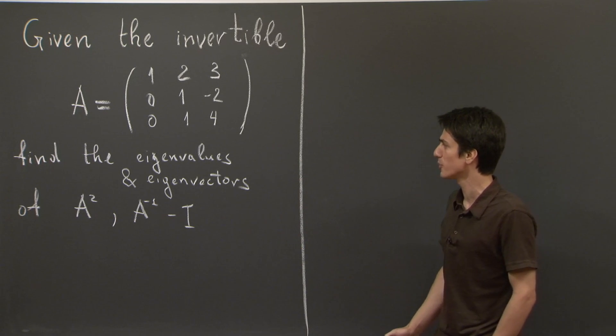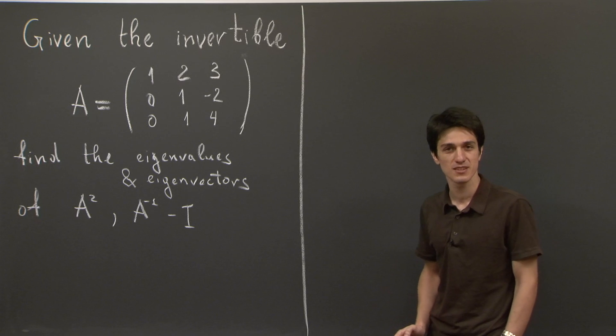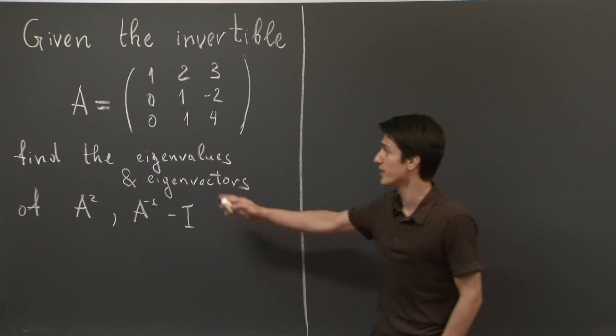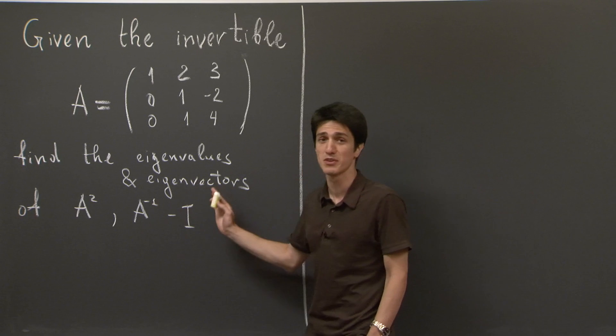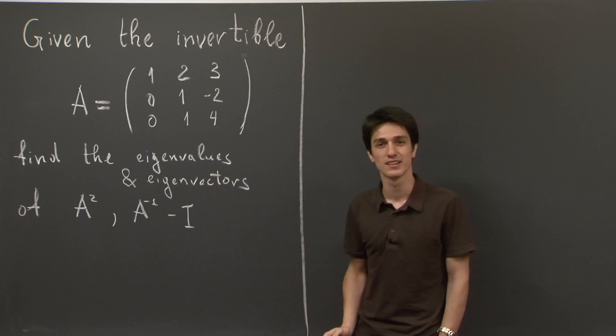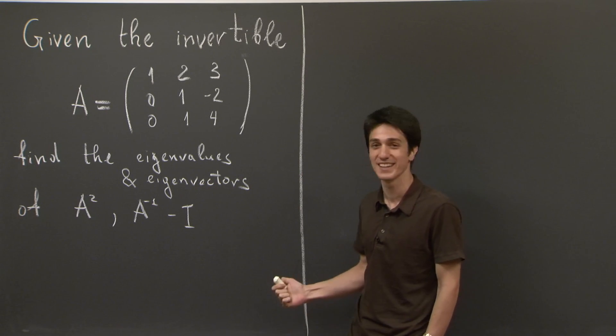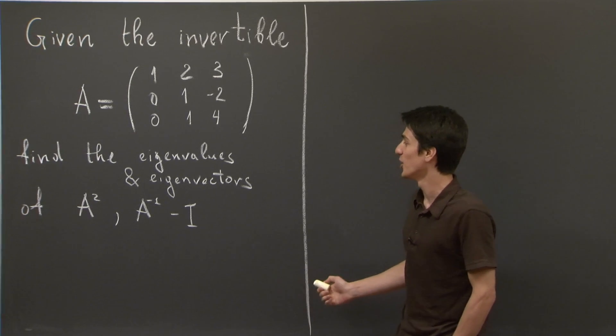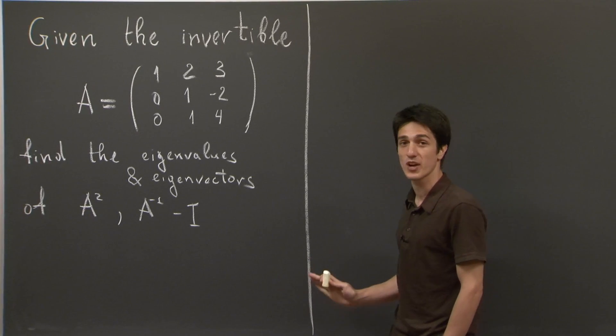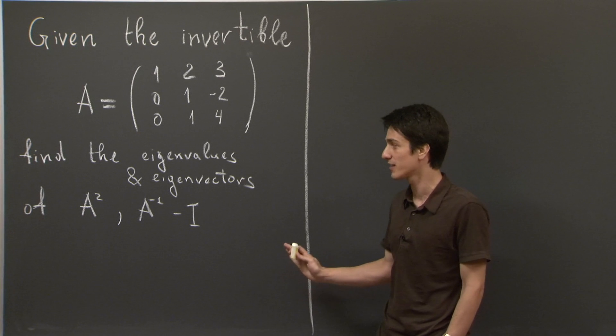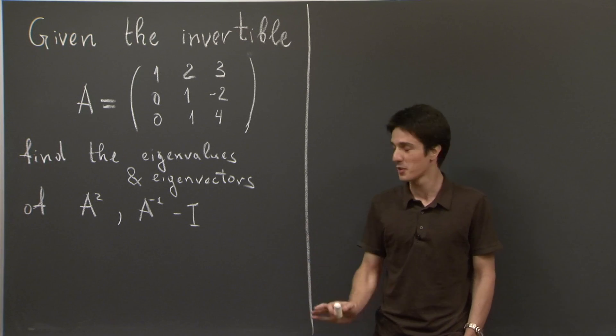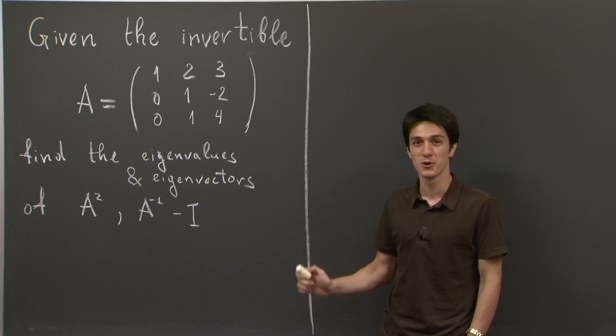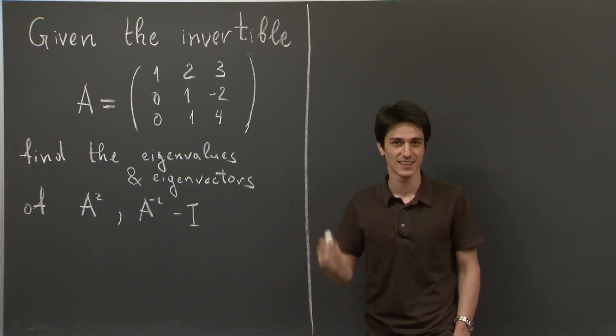So this problem might seem daunting at first. Squaring a 3 by 3 matrix or taking an inverse of a 3 by 3 matrix is a fairly computationally intensive task. But if you've seen Professor Strang's lecture on eigenvalues and eigenvectors, you shouldn't be all too worried. So I'll give you a few moments to think of your own line of attack, and then you'll see mine.